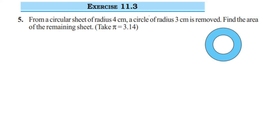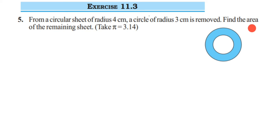Here is a question on exercise 11.3, this is the fifth question from chapter Perimeter and Area of class 7. The question is: from a circular sheet of radius 4 centimeters, a circle of radius 3 centimeters is removed. Find the area of the remaining sheet, and they have given us to take pi as 3.14.